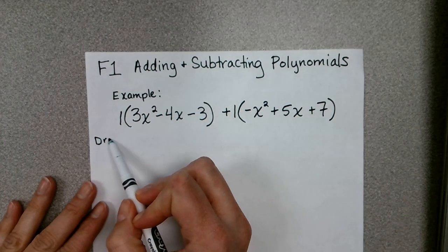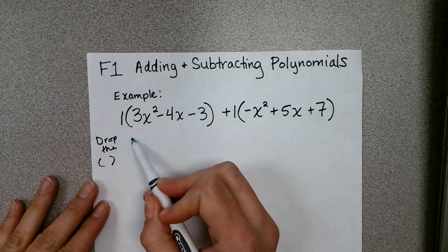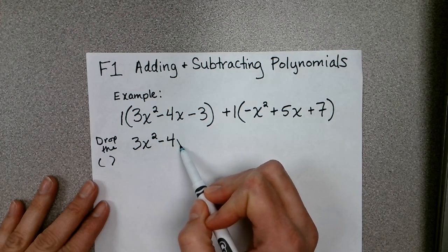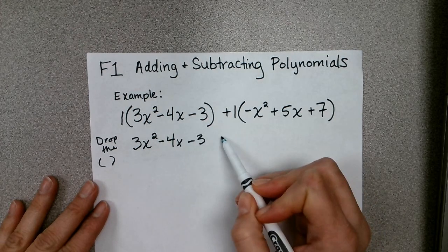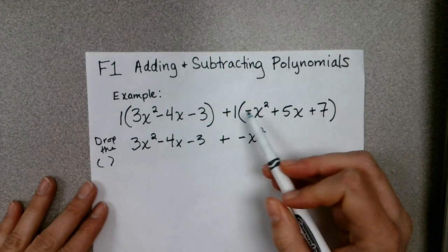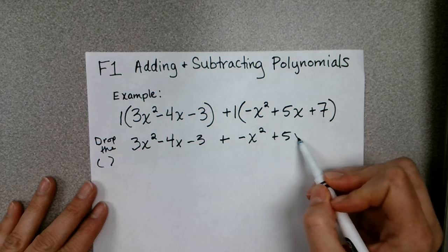So it's important to note here that in this case you can drop the parentheses, and that may help some of you to proceed in the problem. So we have 3x² - 4x - 3, plus a negative x² (notice 1 times negative x² would just give us that), plus 5x plus 7.